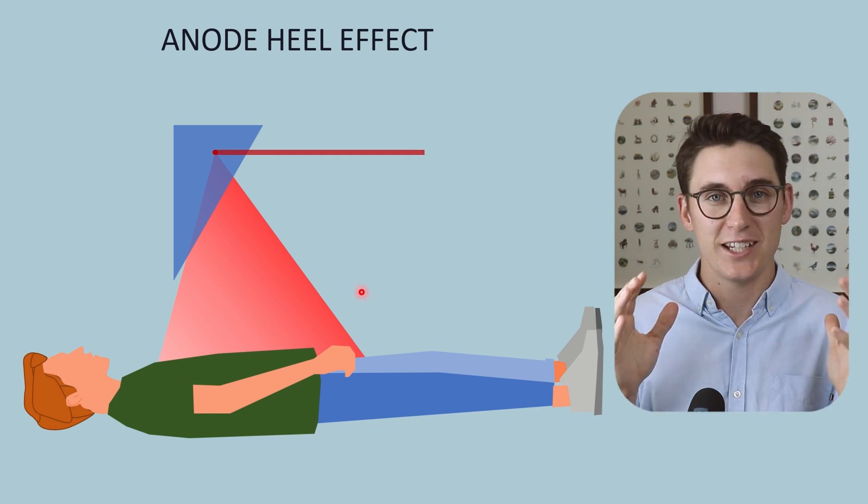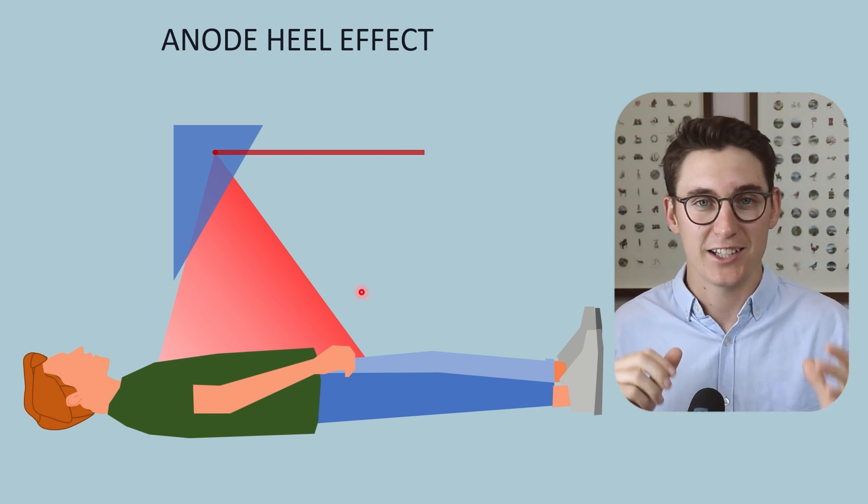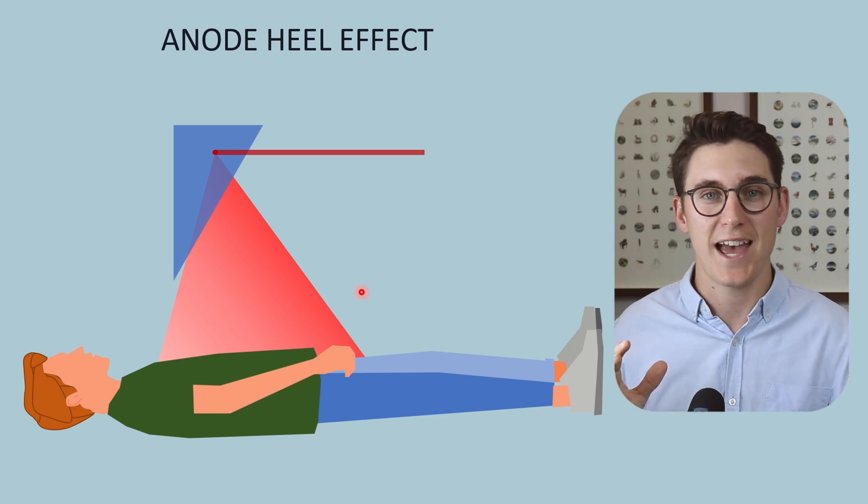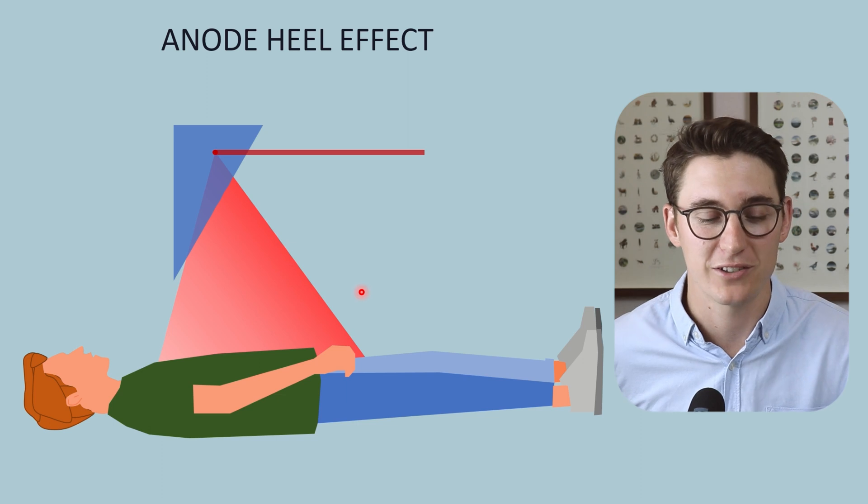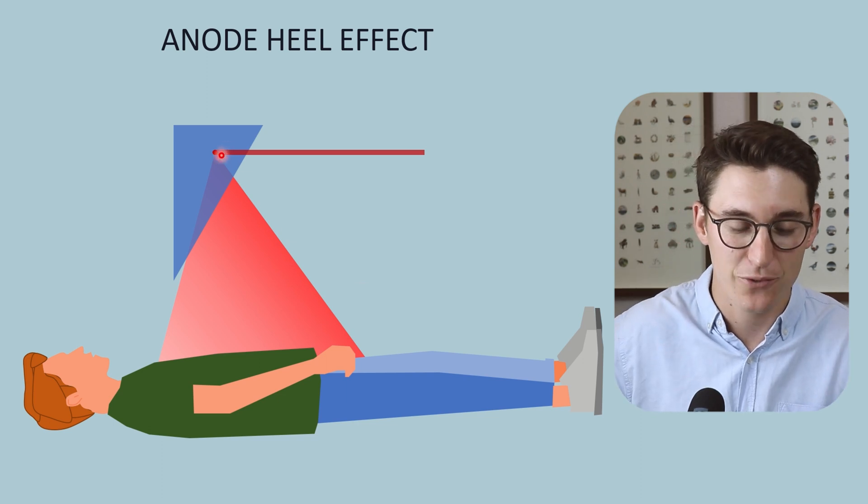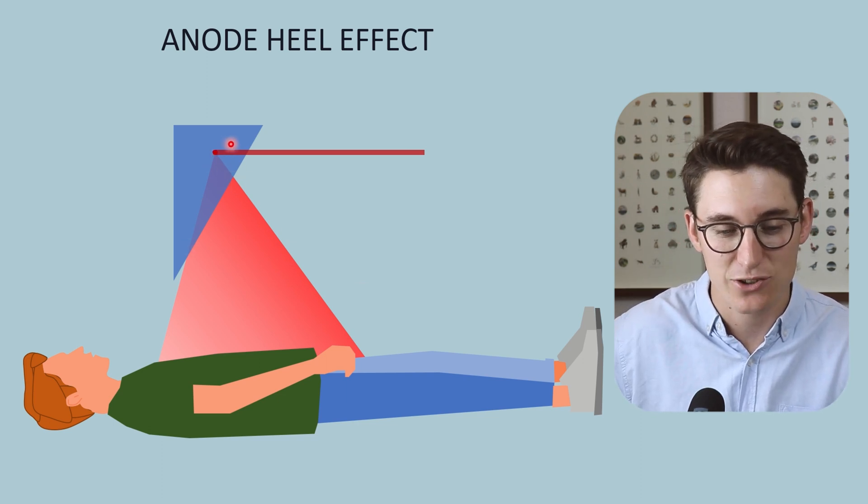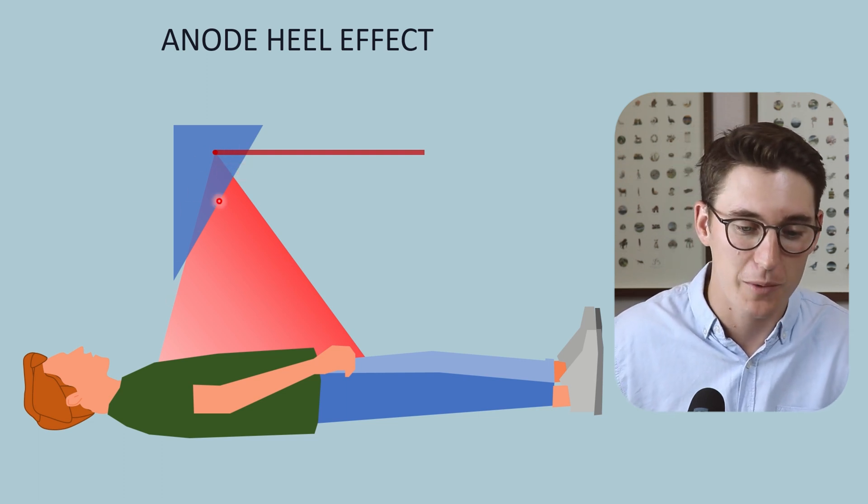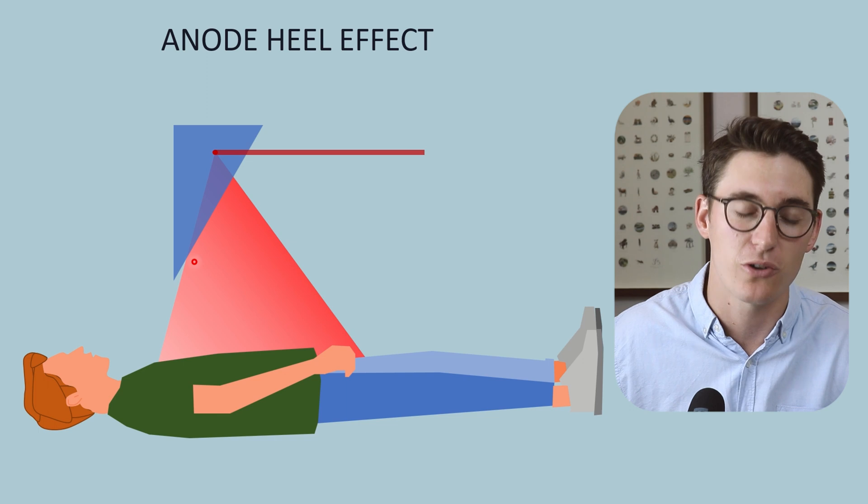So that summarizes the anode heel effect in a nutshell. It describes the variation in x-ray beam intensities between the anode and cathode end of our field and it's due to the differential distances that the x-rays have to travel when leaving the anode. The anode part of our beam has to go through a larger part of the anode heel.